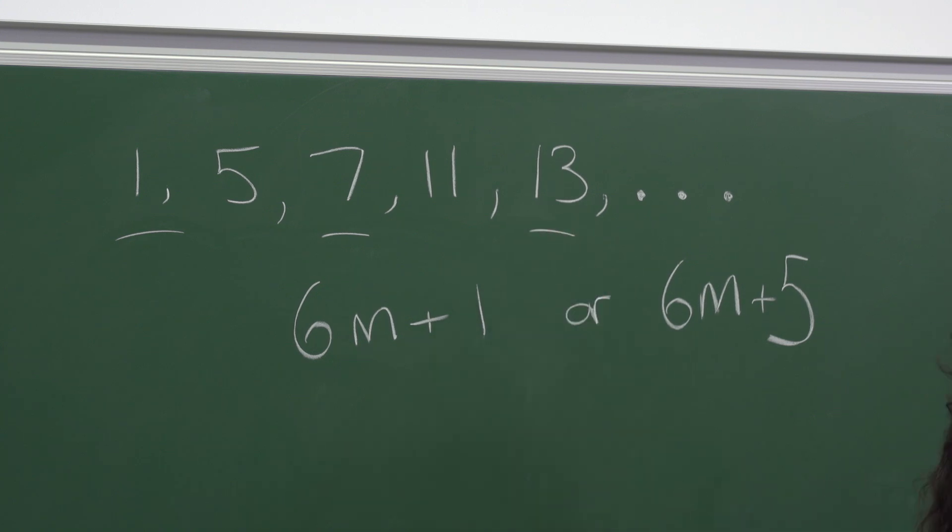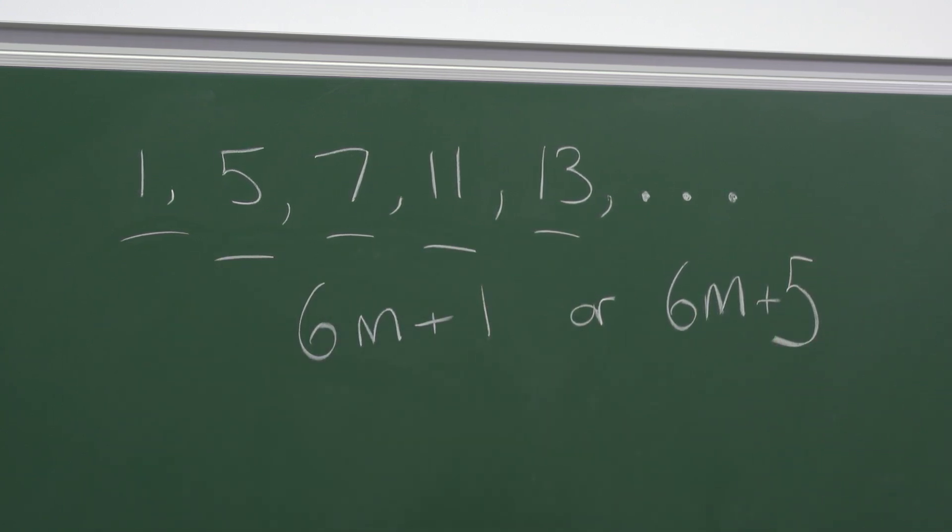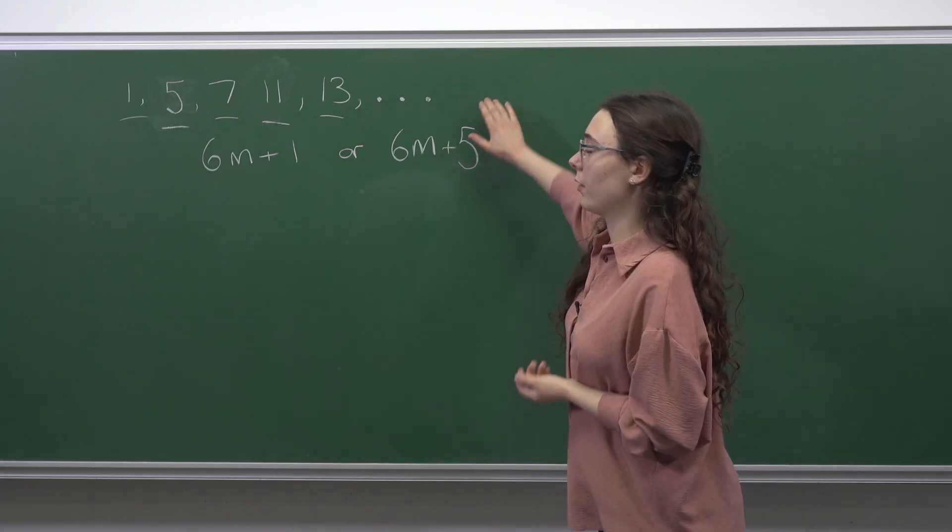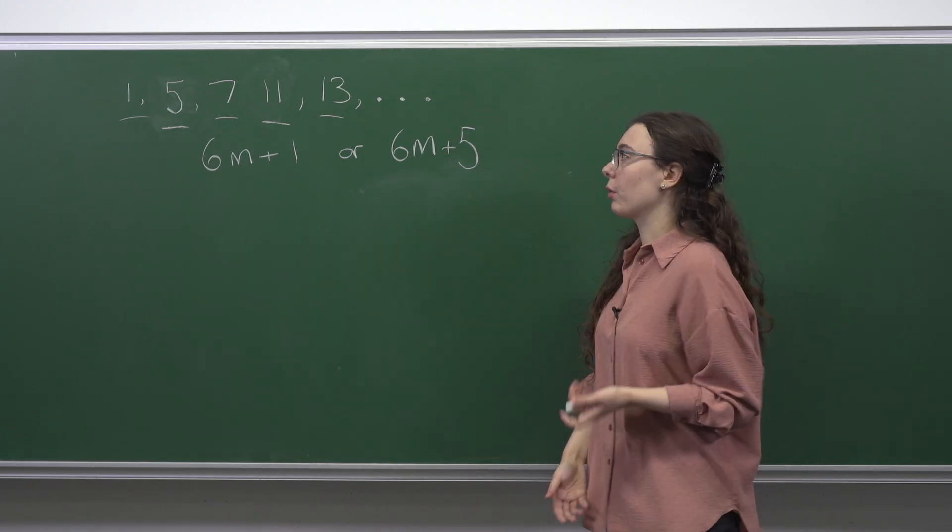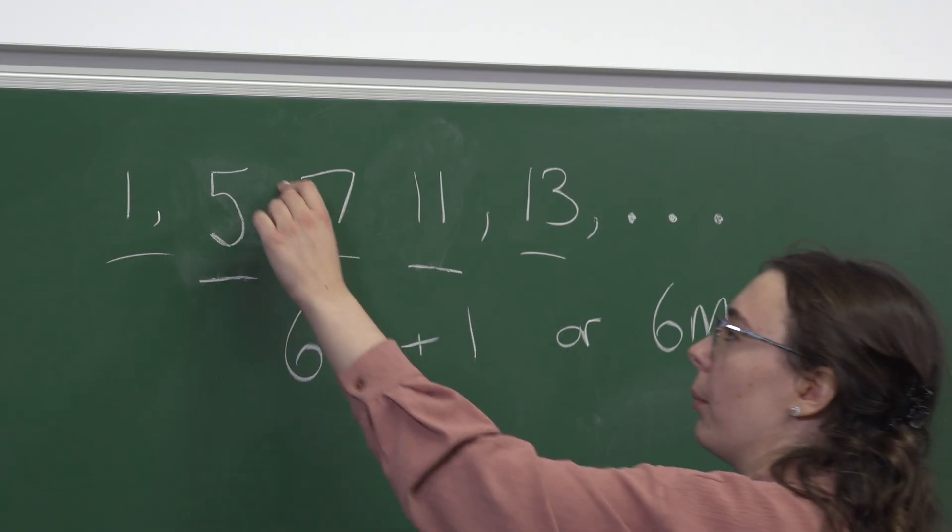So if we're looking for the hundredth term of this sequence overall, then we're really looking for the fiftieth term of this subsequence of numbers which leave remainder five on division by six.